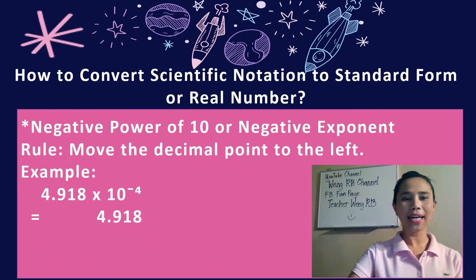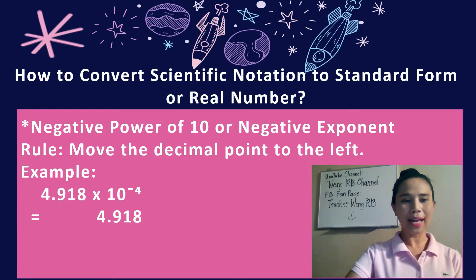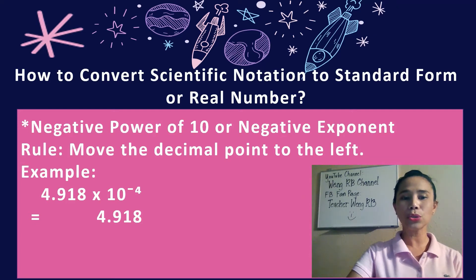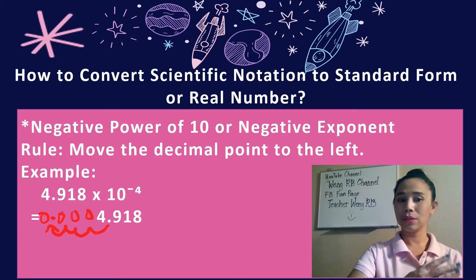Let's now move on to how to convert scientific notation to standard form when dealing with negative power of 10 or negative exponent. The rule is move the decimal point to the left. An example is 4.918 times 10 to the negative 4 power. Let's make a space before the number because we are moving to the left. Since the exponent is negative 4, we are moving 4 places to the left. Since there's no more number to the left, we can just put some zeros in there.